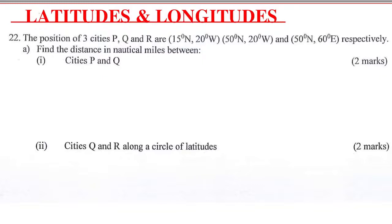Part A: Find the distance in nautical miles between cities P and Q, and between cities Q and R along a circle of latitudes.